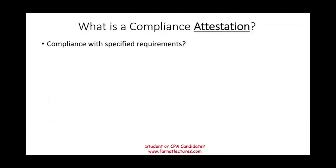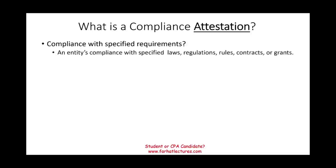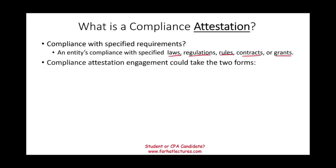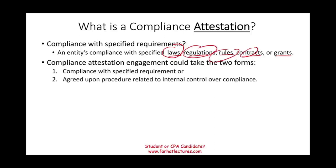The first key term is 'compliance with a specified requirement,' meaning the entity is in compliance with specified laws, regulations, rules, contracts, grants, or whatever the topic is. Compliance attestation engagement can take two forms: compliance with a specified requirement, or agreed-upon procedures related to internal control over compliance. Make sure when you see 'internal control,' you recognize it as internal control over compliance.